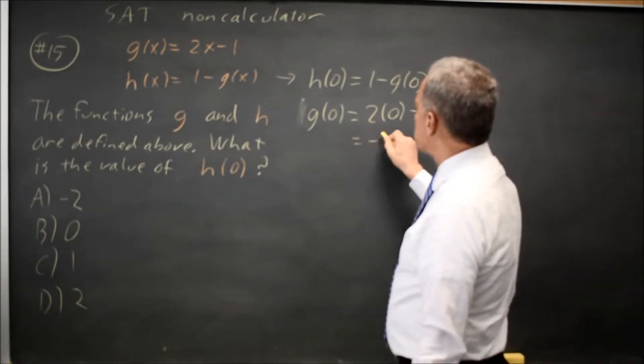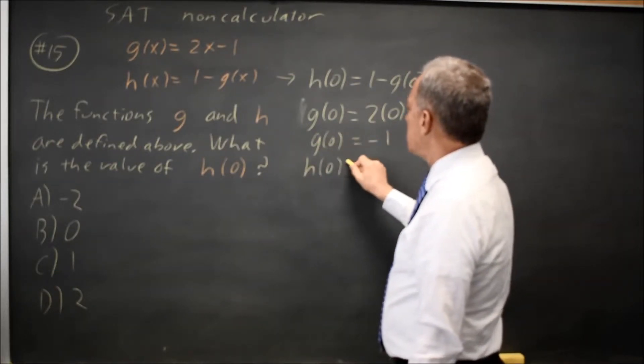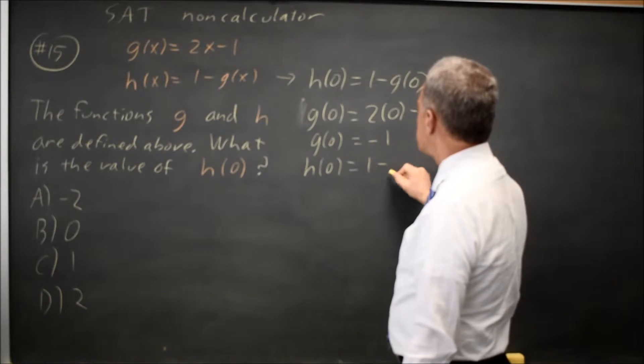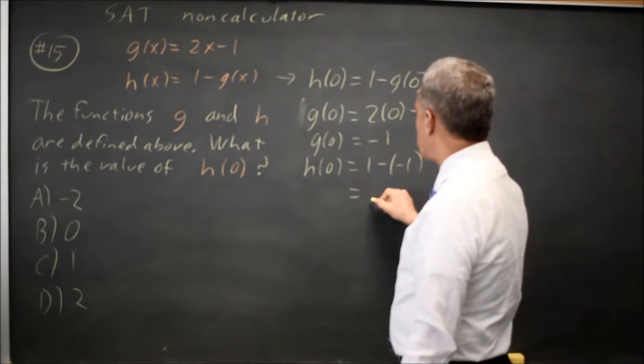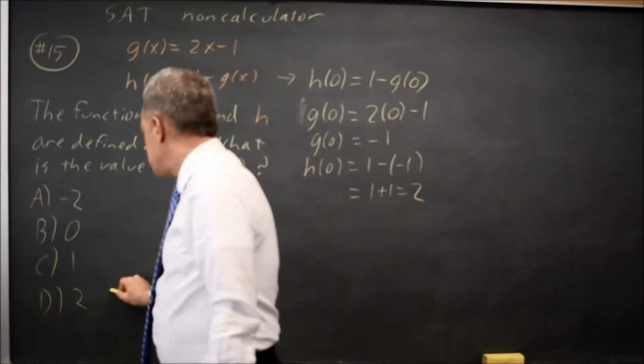So g of 0 equals negative 1, which means h of 0 equals 1 minus g of 0 is 1 minus negative 1, which is 1 plus 1 equals 2. So that would be choice D.